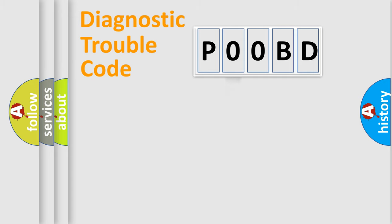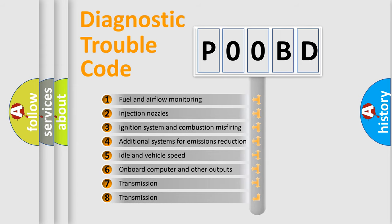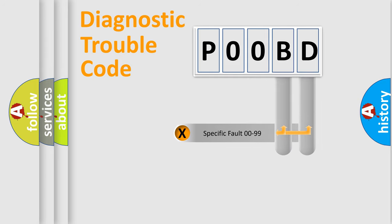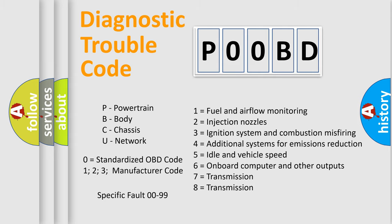The third character specifies a subset of errors. The distribution shown is valid only for the standardized DTC code. Only the last two characters define the specific fault of the group. Let's not forget that such a division is valid only if the second character code is expressed by the number zero.